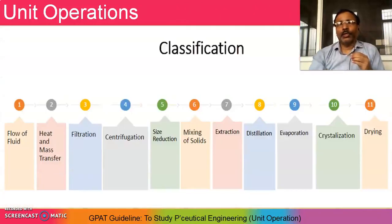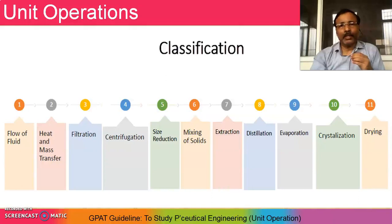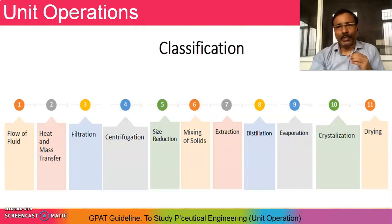This unit operation subject covers 11 parameters: 1. Fluid flow, 2. Heat and mass transfer, 3. Filtration, 4. Centrifugation, 5. Size reduction, 6. Mixing of solid, 7. Extraction, 8. Distillation, 9. Evaporation, 10. Crystallization, and 11. Drying. We will check out one by one what to cover under each topic as a guideline for the GPAT examination.